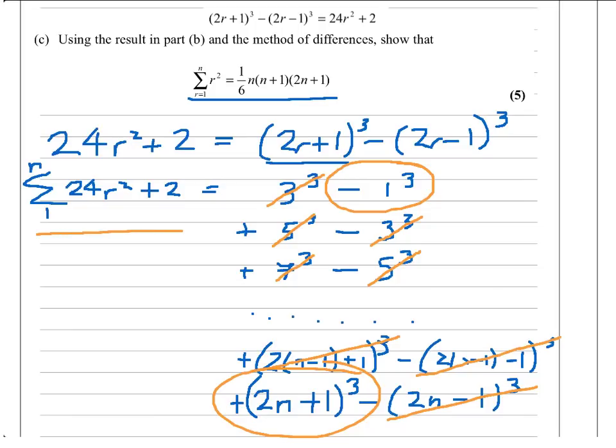Eventually, I'm actually left just with minus 1³ plus (2n+1)³, and that equals not my sum of r², but my sum of 24r² plus 2. Of these 5 marks, we've actually only got 2 at this stage: a method mark and an accuracy mark for substituting stuff into my equation correctly. There's 3 more marks to get.